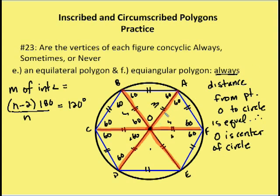This shows that the hexagon's vertices all lie on the circle. Recall that the definition of a circle is the set of all points equidistant from a fixed center point. We've shown that O is the center because OA, OB, OC, OD, OE, and OF are all equal. So connecting those points and leaving O as the center confirms the hexagon is always concyclic. This approach — creating congruent triangles to show equal distances from center to vertices — works for any equiangular polygon.